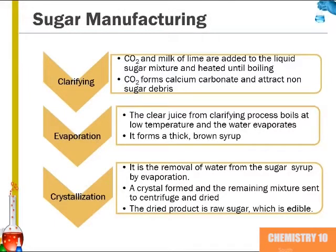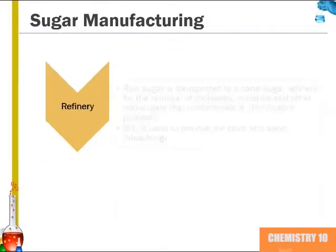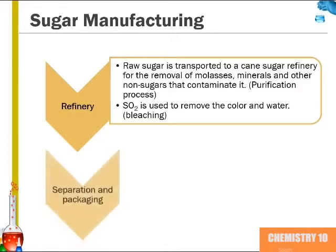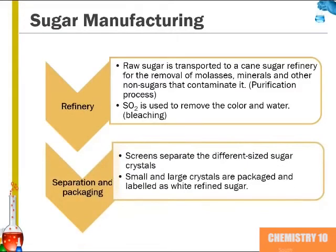The dried sugar product is raw sugar, which is edible. Raw sugar is then transported to the cane sugar refinery for the removal of molasses — which gives it its brown color — minerals, and other non-sugars that contaminate it. Sulfur dioxide is used to remove the color in the water, and this is the bleaching step. From there, the crystals are separated by their different sizes, and small and large crystals are packaged and labeled as white refined sugar.